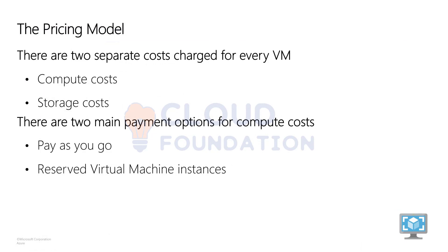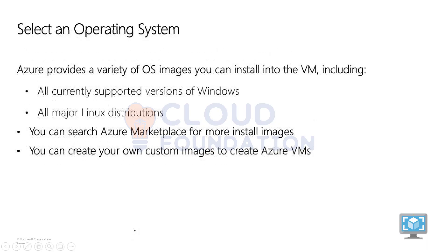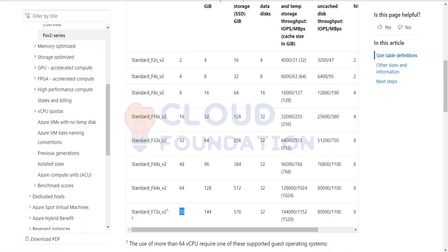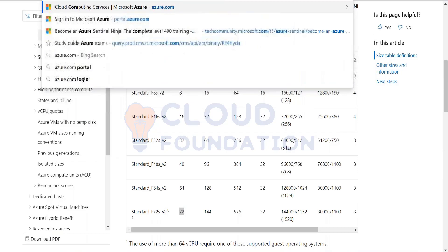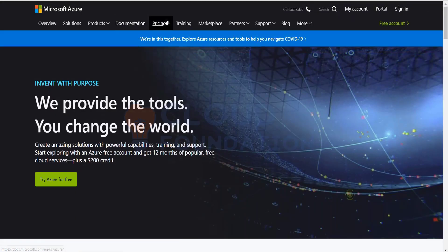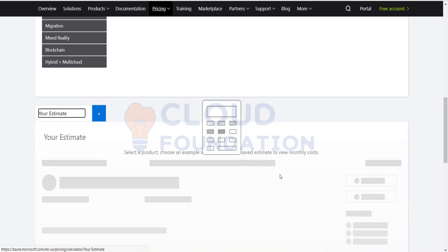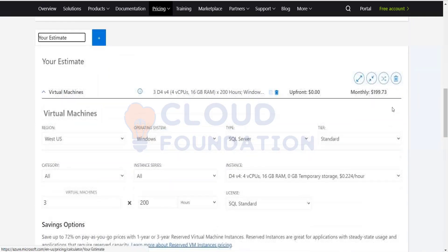When it comes to pricing model, the cost involves compute cost and storage cost, along with a number of other factors. The slide mentions four options but it doesn't cover all aspects. The best way to check for this is to use the pricing calculator tool given by Microsoft, which will help us understand what factors determine the cost of a machine.